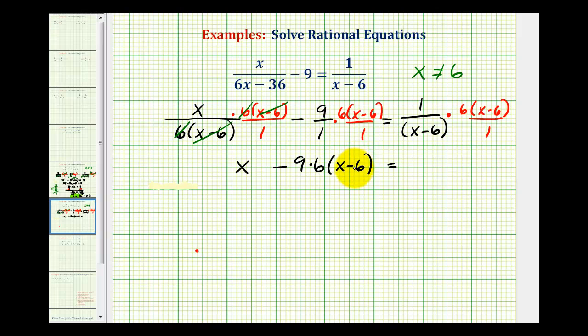and then on the right side, we have a factor of x minus six over a factor of x minus six. That simplifies to one. Again, notice our denominator is equal to one. The right side of the equation is just one times six, or six.